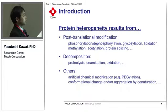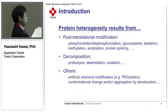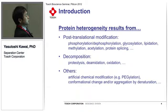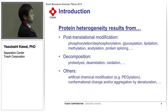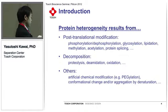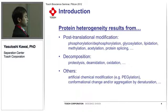The sources of protein heterogeneity are classified into the following three groups. The first is post-translational modification, such as phosphorylation and dephosphorylation, glycosylation, lipidation, myristoylation, acetylation, and protein splicing. The second group is decomposition, such as proteolysis, deamidation, and oxidation. The last is other kinds of heterogeneity, including artificial chemical modification, and conformational change and aggregation by denaturation.